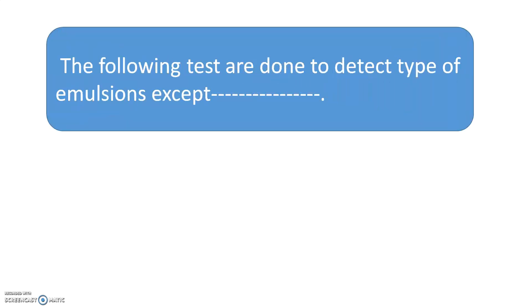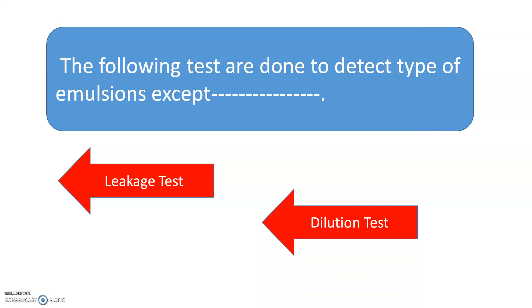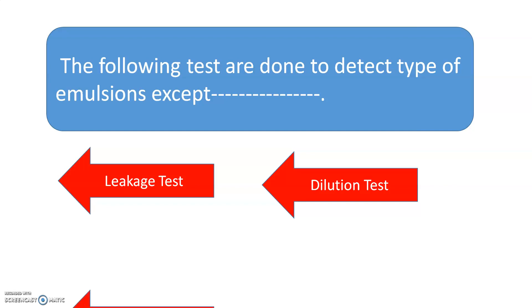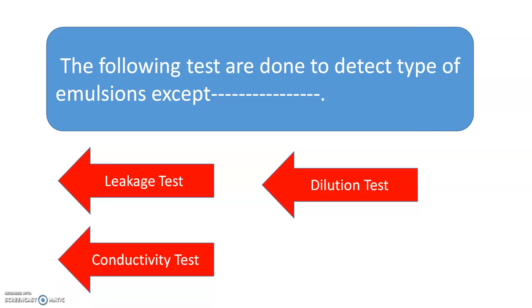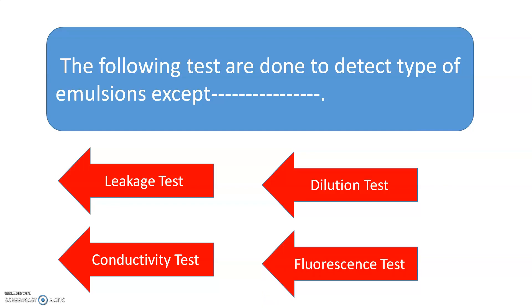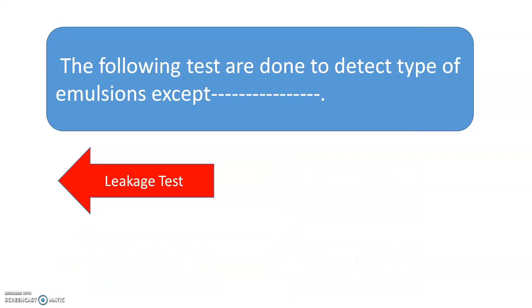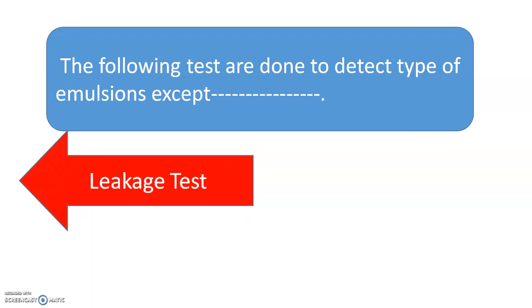The following tests are done to detect the type of emulsions, except: leakage test, dilution test, conductivity test, or fluorescence test. These are the various tests used to detect the type of emulsion, and the answer is leakage test. Except for the leakage test, all the following tests are used.